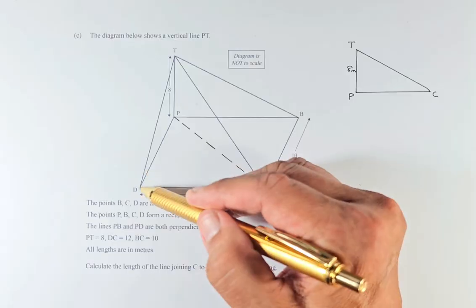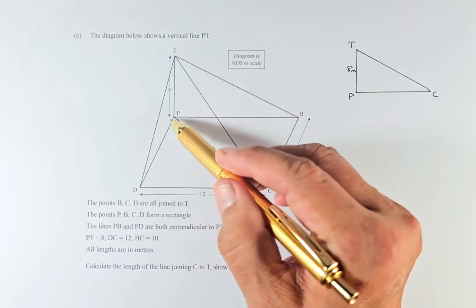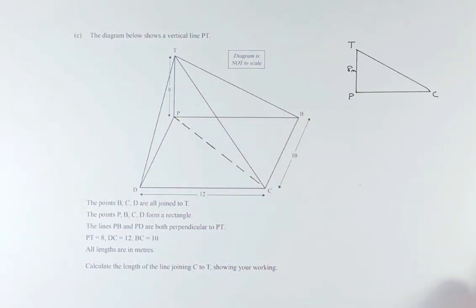All of them are perpendicular. So PT and PB, they are 90 degrees. PT is 8, DC is 12, and BC is 10. All lengths are in meters. Calculate the length of the line joining CT.